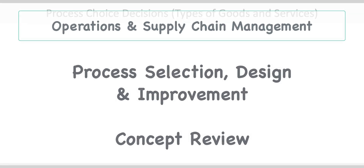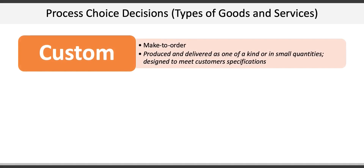Chapter 7 starts out by introducing us to three types of goods and services that lead to process choice decisions. The first is custom or make-to-order goods and services that are produced and delivered as a one-of-a-kind set or in small quantities and designed to meet exact customer specifications. Product examples might include a custom home or a tailor-made suit, and service examples could include an audit or a law firm handling a particular divorce. In all these examples, each customer or client has a different expectation or requirement and the product or service is just for them.